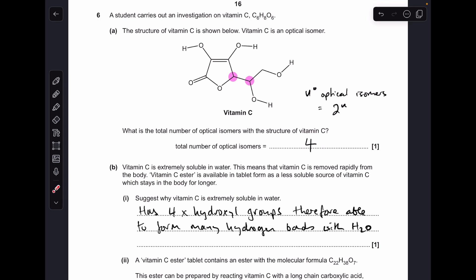Vitamin C is obviously very soluble because it's got these four hydroxyl groups, so it can form lots of hydrogen bonds with water.